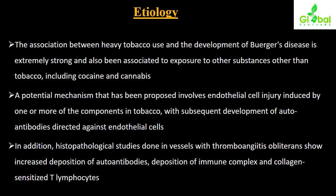Regarding etiology, the association between heavy tobacco use and the development of Buerger's disease is extremely strong. It has also been associated with exposure to other substances including cocaine and cannabis. The foremost etiological factor is the heavy and chronic use of tobacco, primarily via smoking.